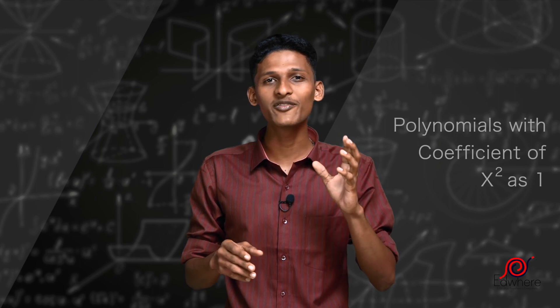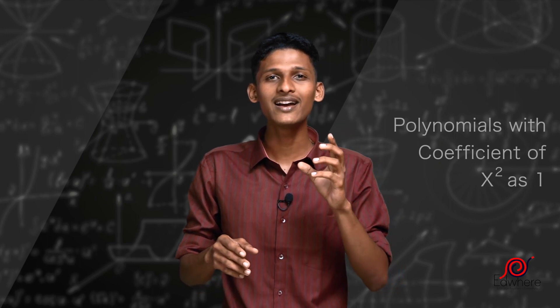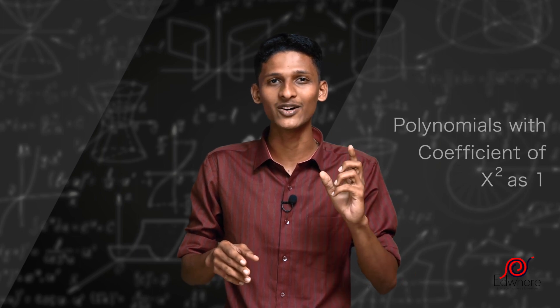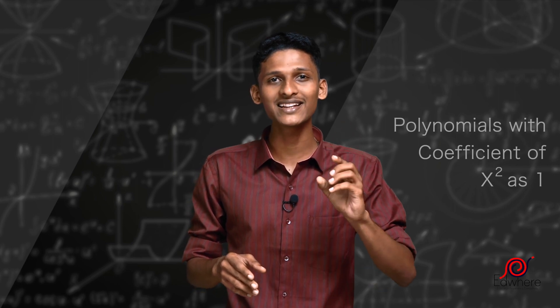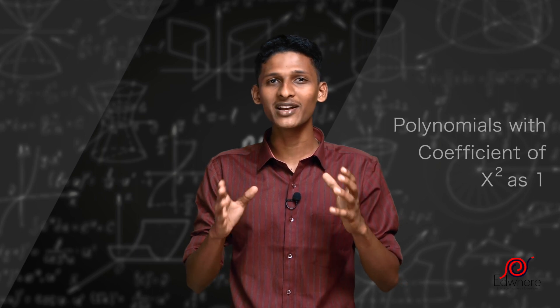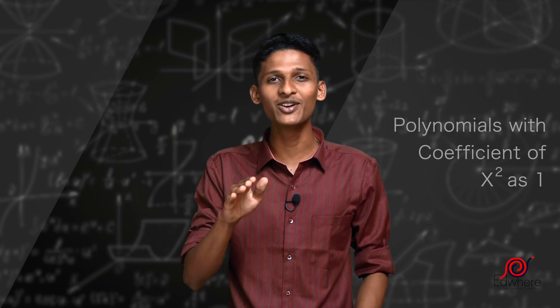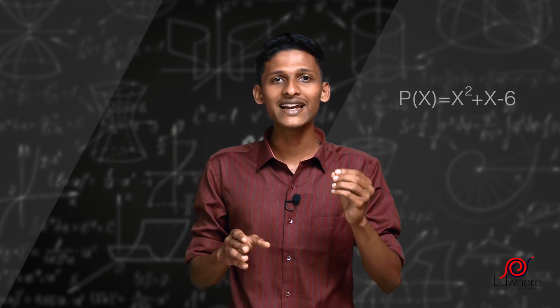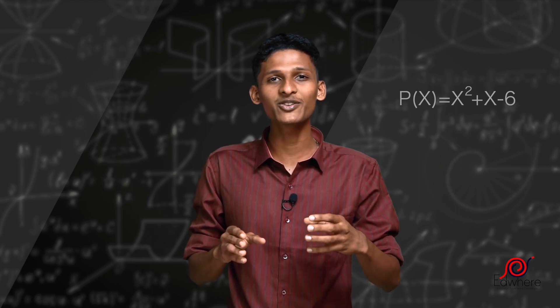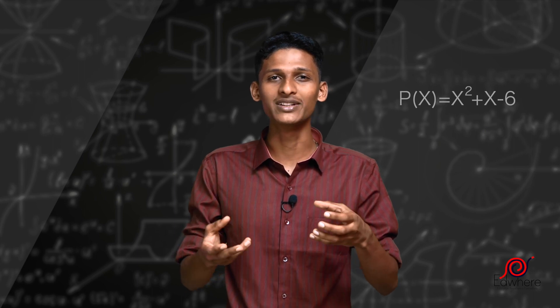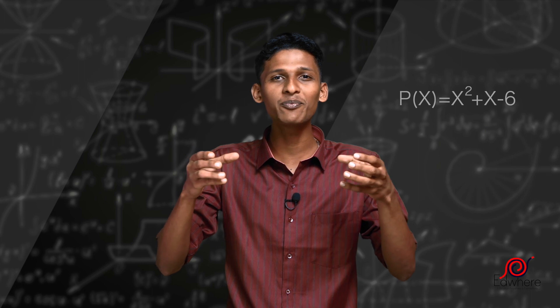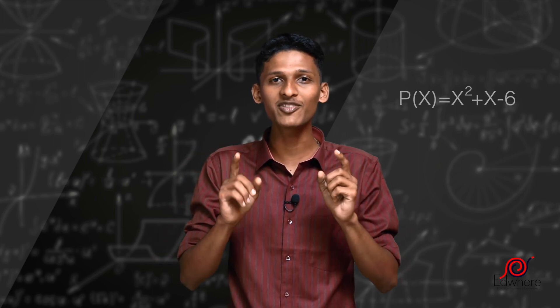In this polynomial, the coefficient of x² is 1. Since the x² coefficient is 1, we should still be able to find a factor. We will look at the polynomial p(x) = x² + x − 6. Where we have to factorize this second-degree polynomial, we will get two first-degree polynomials.